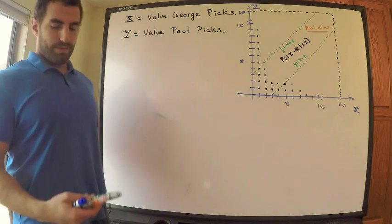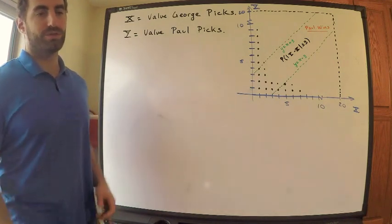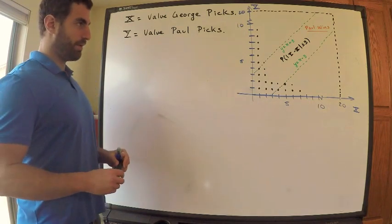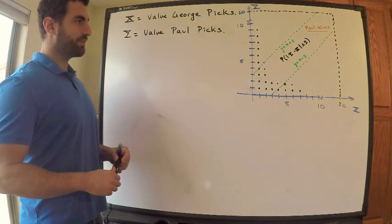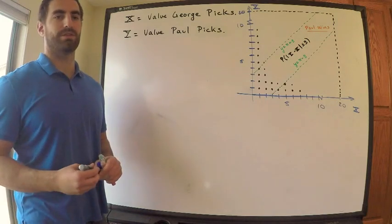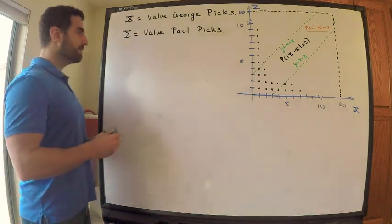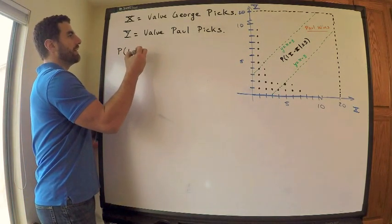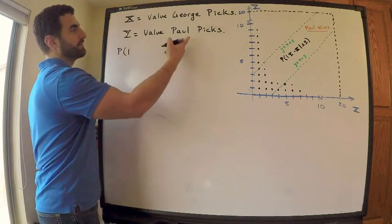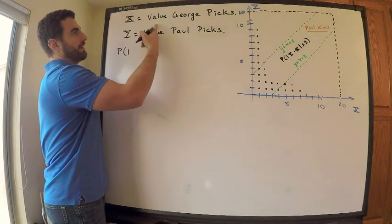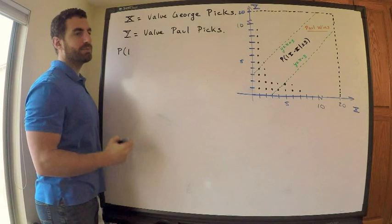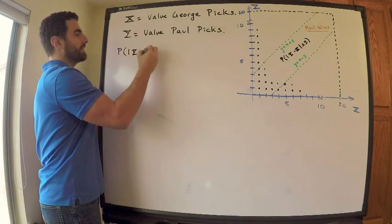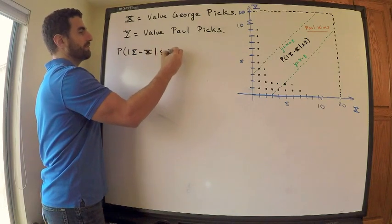And I want to know the probability that Paul wins. So George wins if their difference exceeds 3, and Paul wins if their difference is the opposite of that, so less than or equal to 3. So I want to compute the probability that Y minus X is less than or equal to 3.